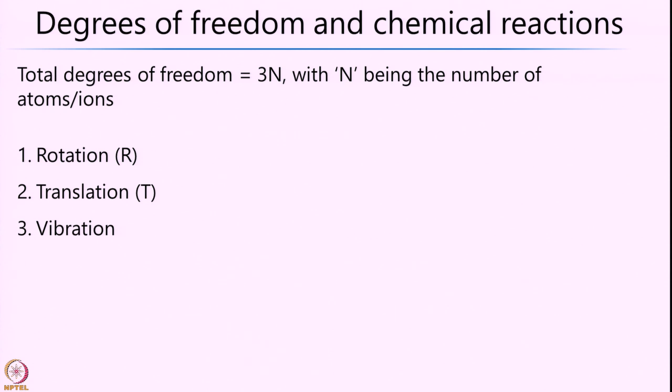These 3n degrees of freedom can further be divided into rotational, translational, and vibrational degrees of freedom. The molecule has all three ways in which it can actually move around. Now let us go ahead and look at only the vibrational degrees of freedom — I will explain in a minute why we are only interested in vibration.